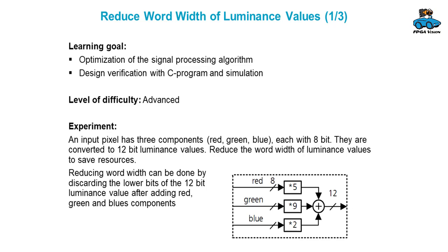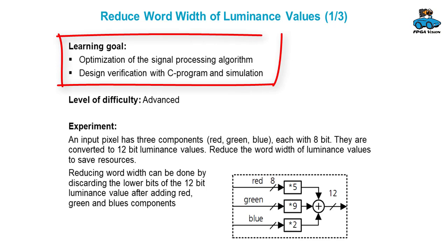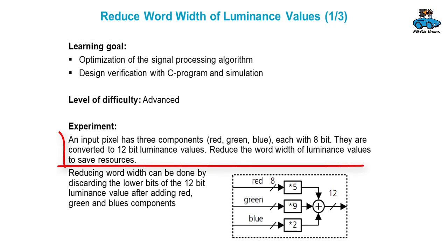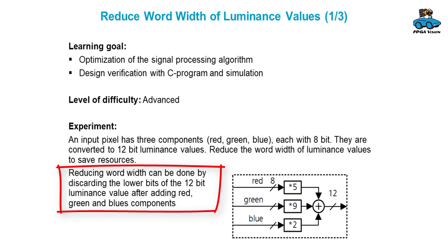As an advanced experiment, you can modify the accuracy — the word width of the luminance values. This is an optimization of the signal processing algorithm and you also learn about design verification with a C program and simulation. The input pixels, red, green, blue, with 8-bit are converted to 12-bit luminance. However, maybe we don't need 12-bit — maybe 10-bit, 8-bit, or 6-bit are sufficient. You can reduce the word width of the luminance by discarding the lower bits of the 12 bits obtained after adding the three components.